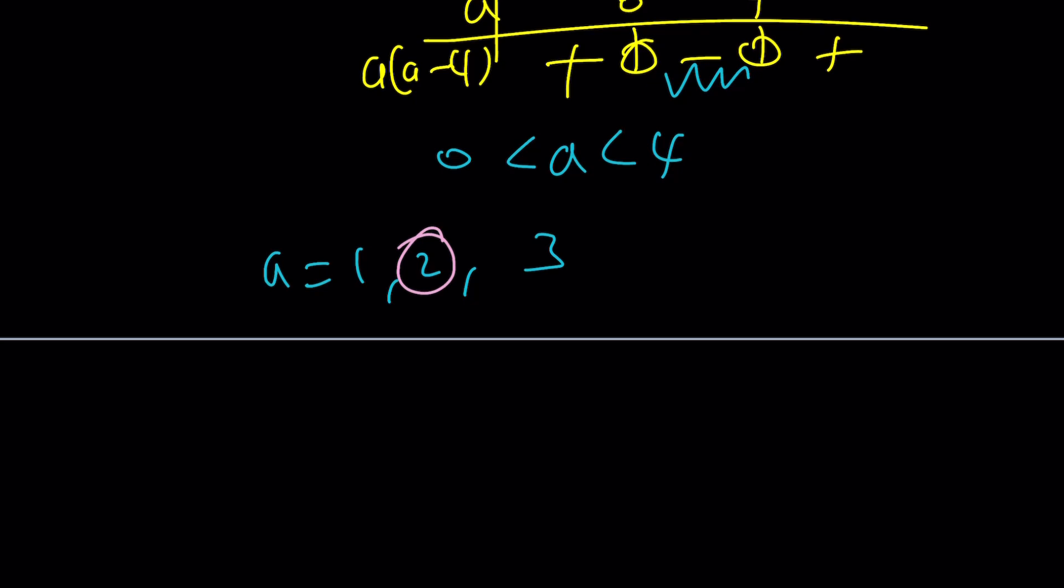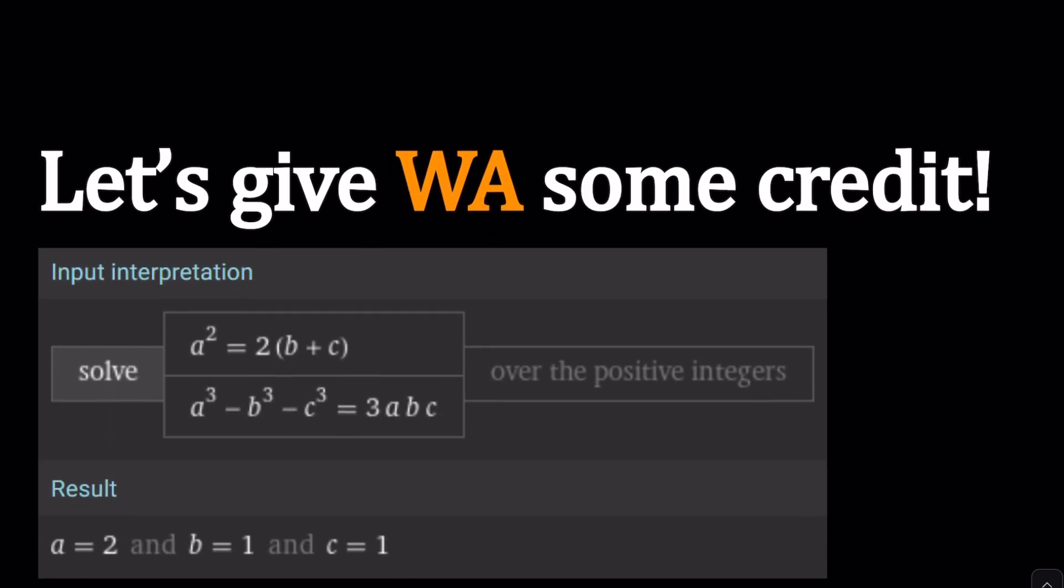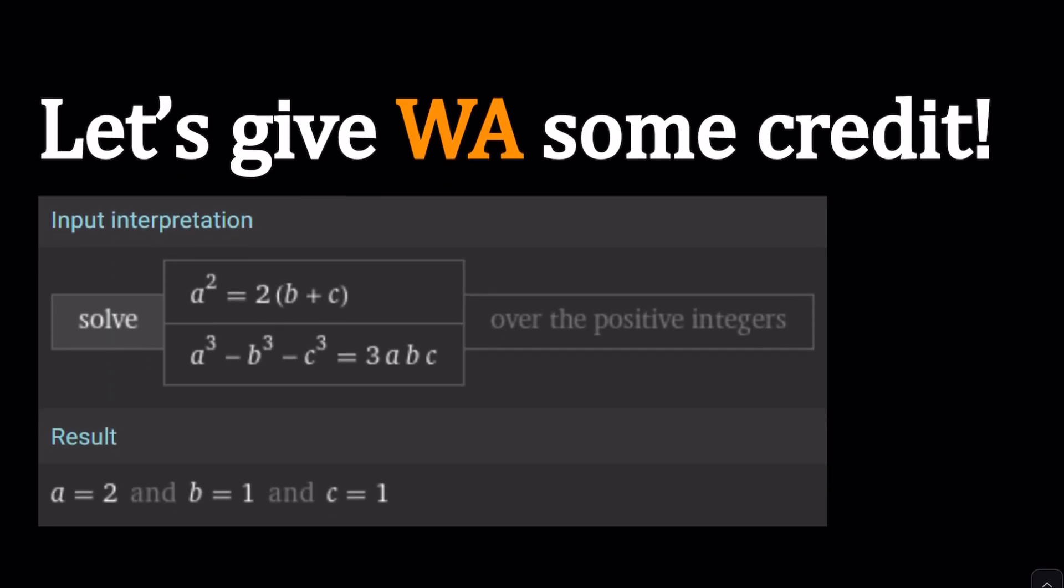Nice. That brings us basically to the same point. a is 2, b is equal to c is equal to 1. And this brings us to the end, almost, but we asked Wolfram Alpha. And let's give Wolfram Alpha some credit this time. Sometimes Wolfram Alpha cannot solve a problem. And I don't know why people are offended when I say something like, okay, AI cannot do this problem at this point. It's a language model.